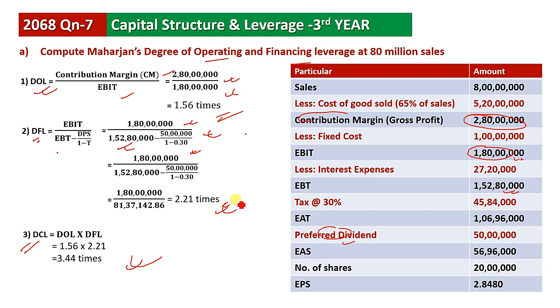Therefore, the degree of operating leverage is equal to 1.56 times and degree of financing leverage is equal to 2.21 times.